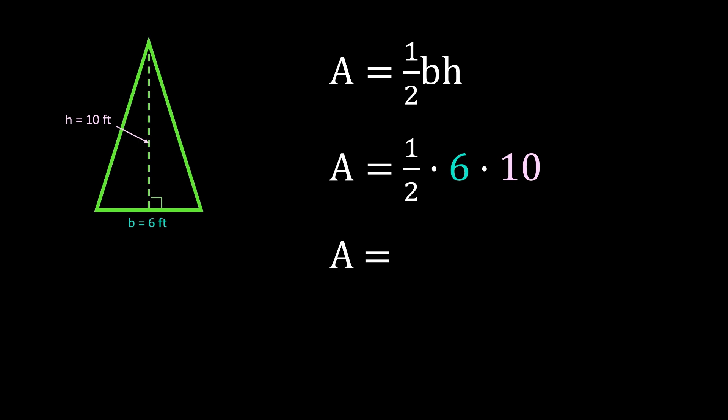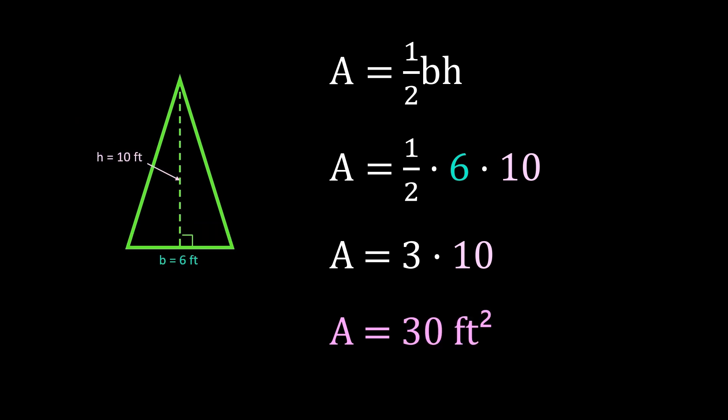Multiplying by one-half is the same as dividing by 2. So we're going to take 6 and divide it by 2. 6 divided by 2 is 3, and we still need to multiply by the 10. So our area is 3 times 10. 3 times 10 is 30, so our area is 30 feet squared.